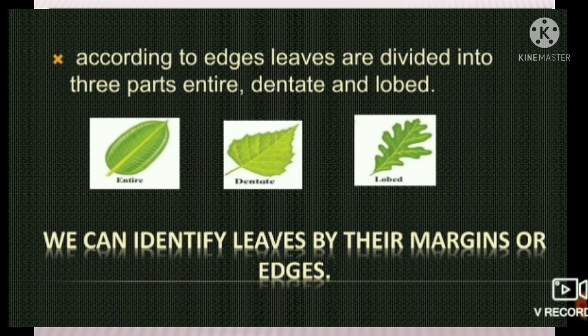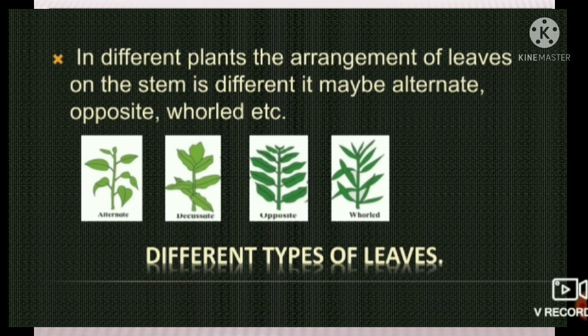According to the edges, leaves are divided into three types: entire, dented, and lobed. In different plants, the arrangement of leaves on the stem is different — it may be alternate, opposite, or whorled. In the pictures, we can easily identify the arrangement of the leaves.